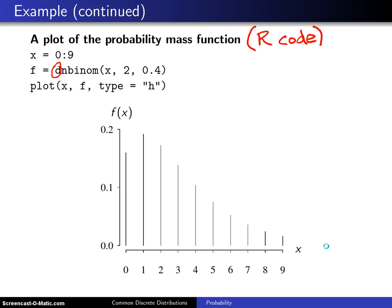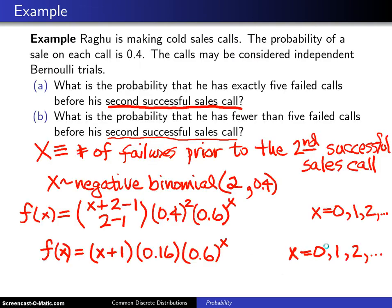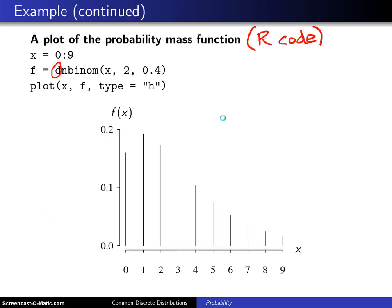Now if you return to the question, part a was looking for the probability you'll have exactly five failed calls before his second successful sales call, and so that probability will show up right here. So if we knew that particular height right there, that would be the answer to part a.